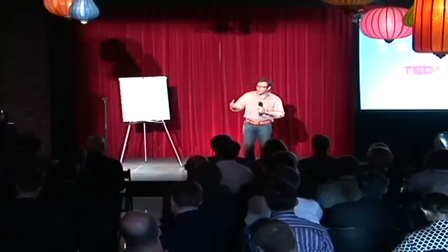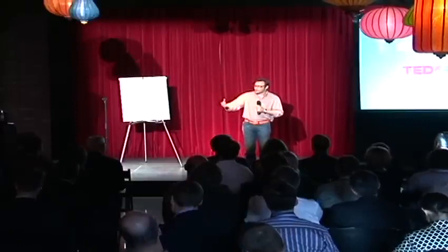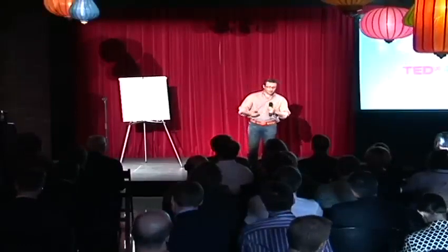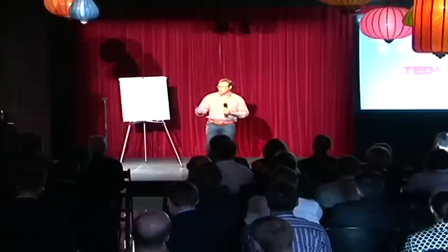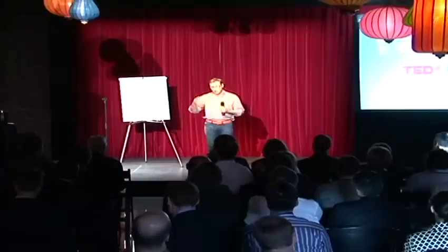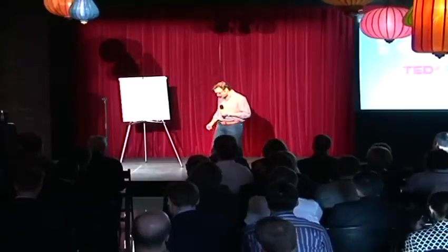Why is it that Martin Luther King led the civil rights movement? He wasn't the only man who suffered in pre-civil rights America, and he certainly wasn't the only great orator of the day. Why him? And why is it that the Wright brothers were able to figure out controlled powered man flight when there were certainly other teams who were better qualified, better funded, and they didn't achieve powered man flight? There's something else at play here.